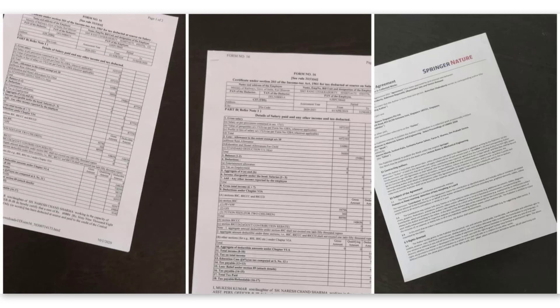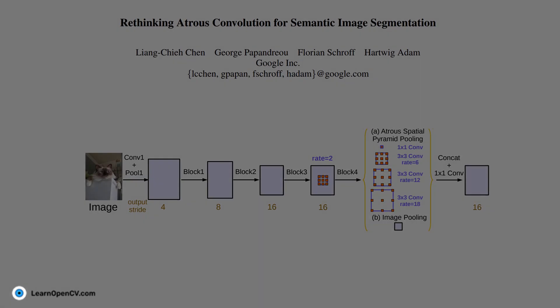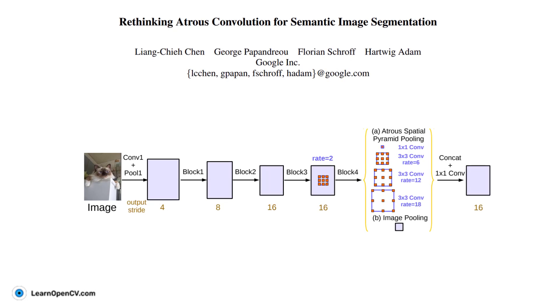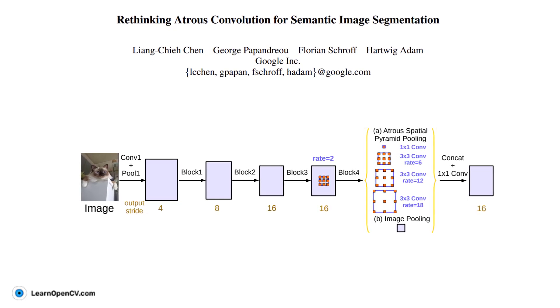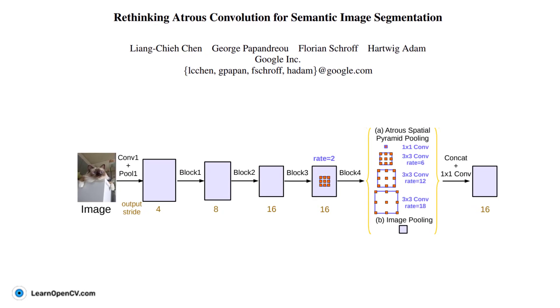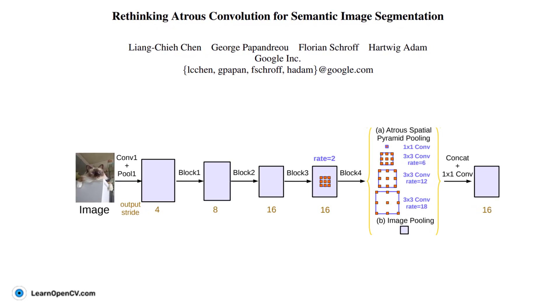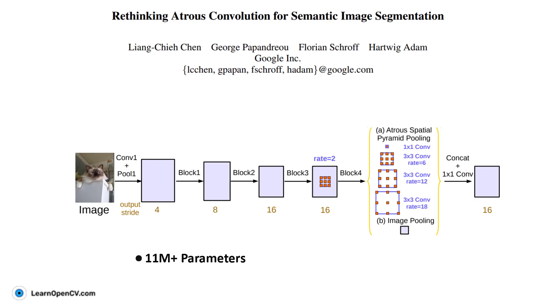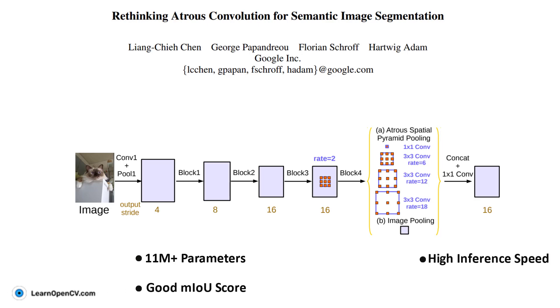we will be using a deep learning based approach for document segmentation. We will train a DeepLab V3 segmentation model in PyTorch for document segmentation. This model has 11 million plus parameters, and moreover, it has a good MIOU score and high inference speed.